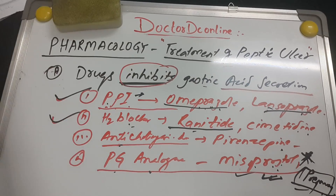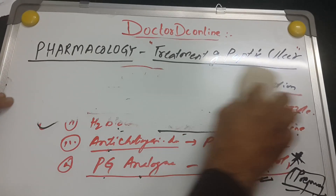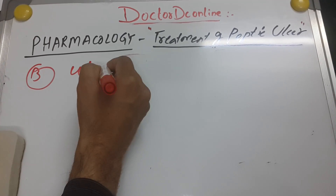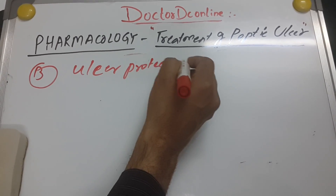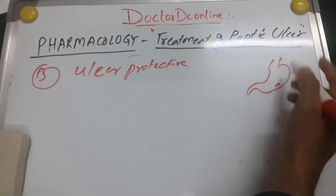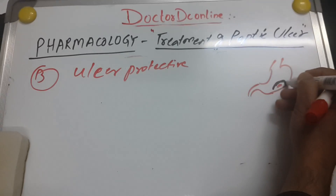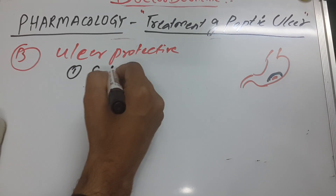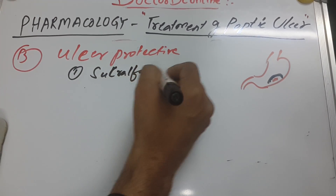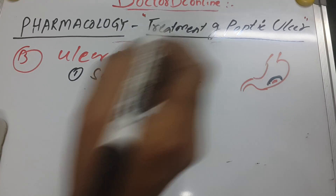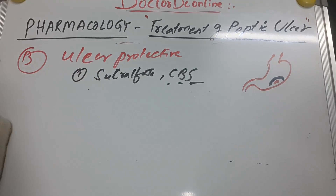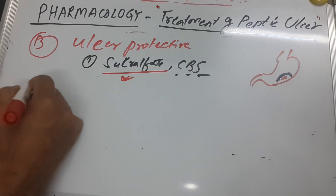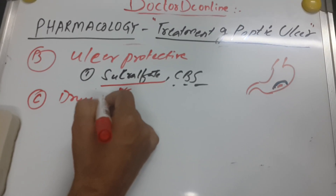The second group of drugs is ulcer protective drugs — for when ulcers already exist. These drugs protect the ulcer site. The main drug here is sucralfate. Sucralfate is the best choice and also colloidal bismuth subcitrate. I prefer sucralfate as the best choice for ulcer protection.